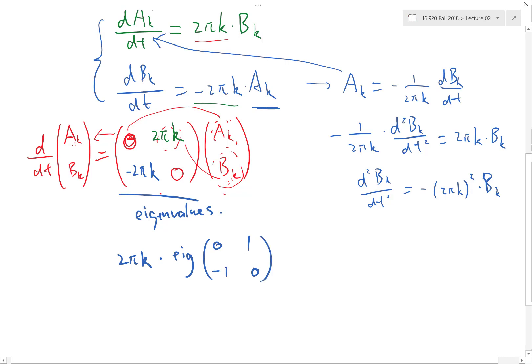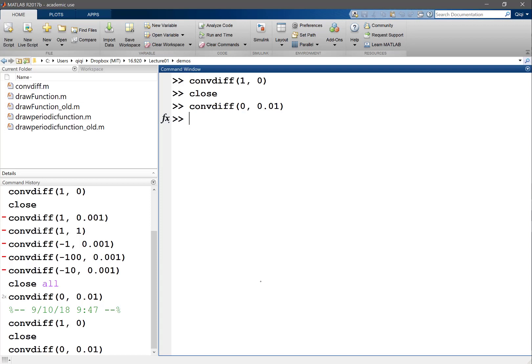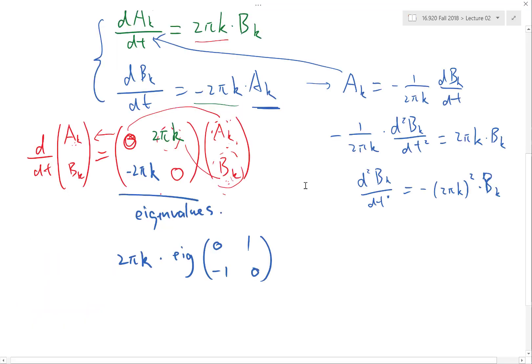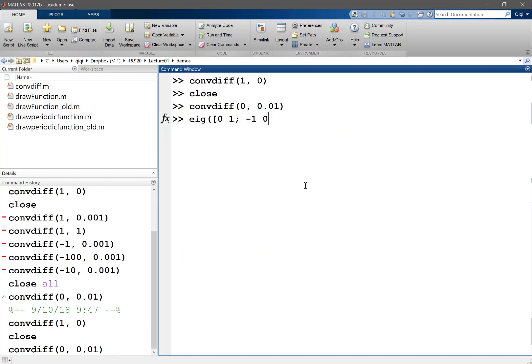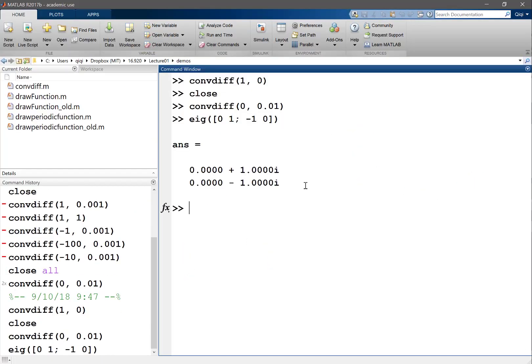If you don't know the eigenvalue of that matrix, you can go to MATLAB and type eig of [0 1; -1 0]. You get plus i and minus i.